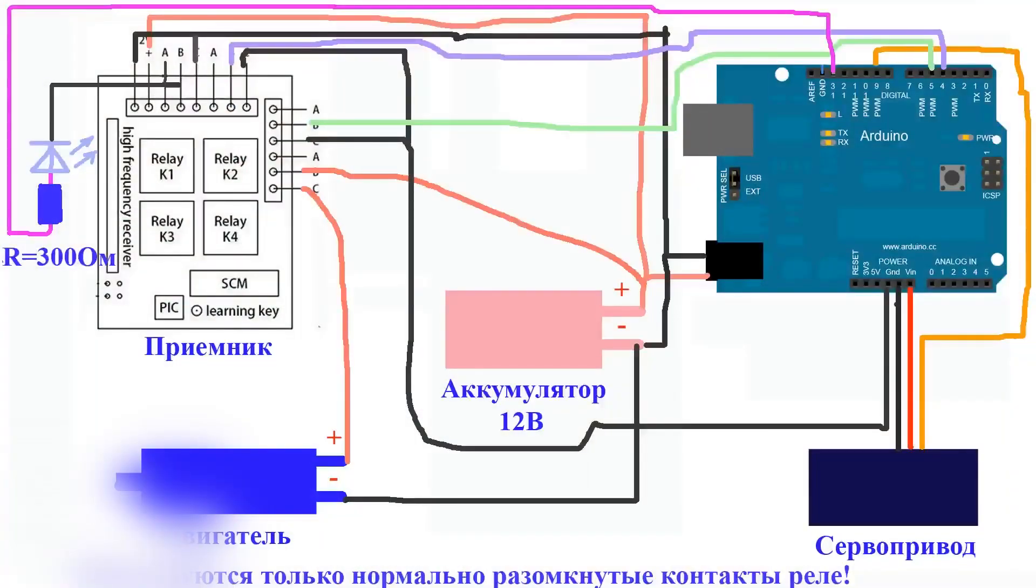R equals 300 ohm, receiver, motor, 12V battery, servo. Use only open type relay contacts.